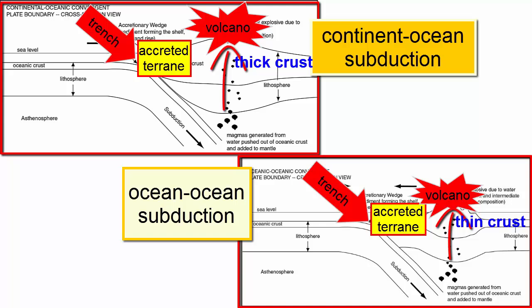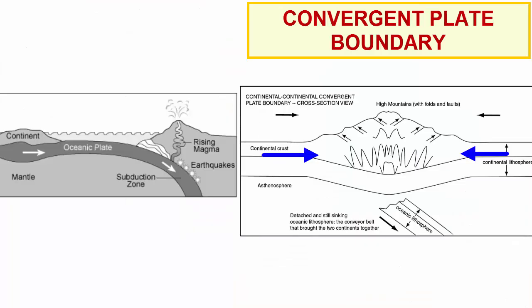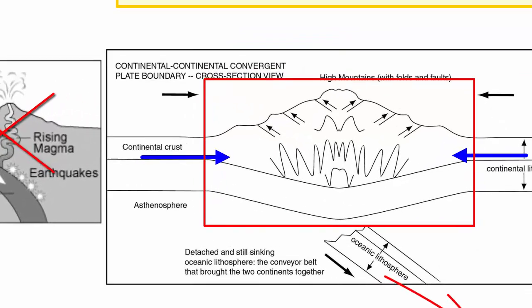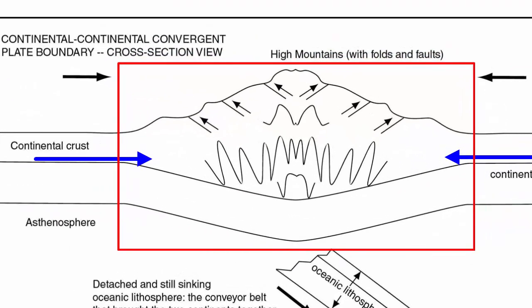Why are subduction zone volcanoes through continental lithosphere more explosive? The thicker the lithosphere, the more likely the gas content will increase in the magmas, and this gas leads to higher pressures and more explosive volcanoes. When two continental plates collide, subduction brings the two together, but then after they collide the subducting plate completely detaches and sinks into the mantle. Volcanism stops, the trench disappears, and the largest mountains found on the planet form as terrain accretion mashes the two continents up into a folded, faulted mountain system that rises high above the surface and has a deep isostatic root beneath.